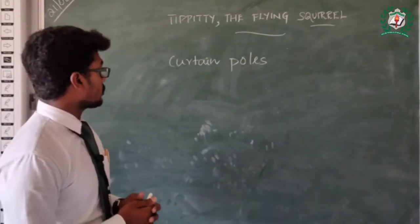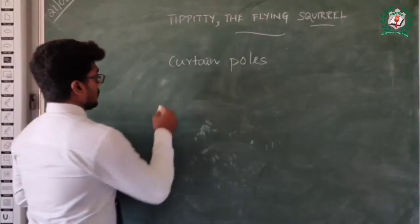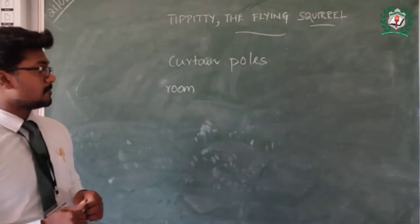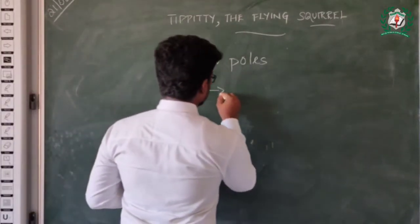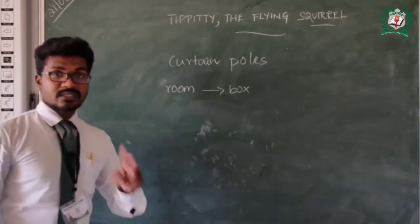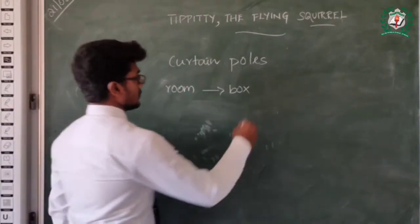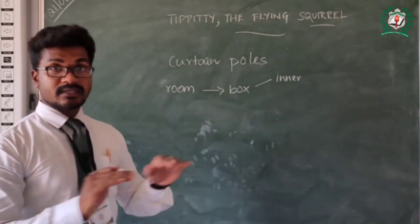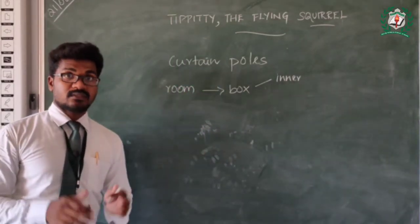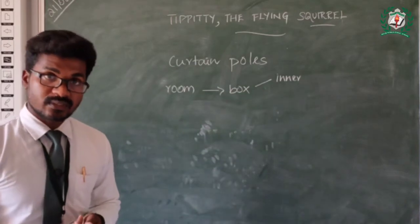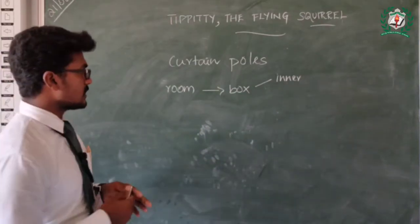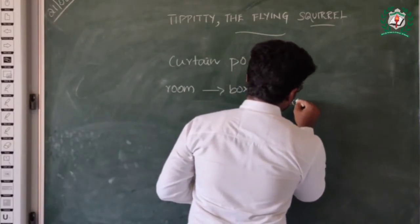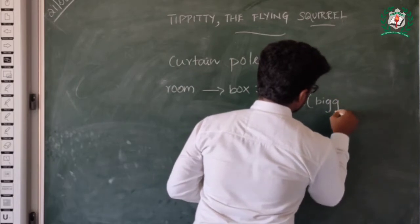You will see about the room of Tippity. It is a box which consists of two rooms. In the inner room where the bed is laid, the nest consists of feathers and cotton for it to sleep. And the outer one is bigger in size, the sitting room.